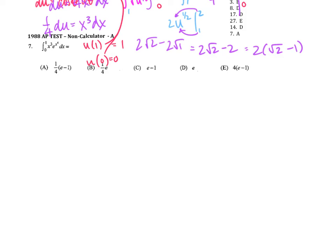Plugging in my upper bound: 1/4 e to the 1st, minus plugging in the lower bound, 1/4 e to the 0. Anything to the 0 is 1, so I'd have 1/4 e minus 1/4. It looks like they want us to factor out again, and we're left with answer a.